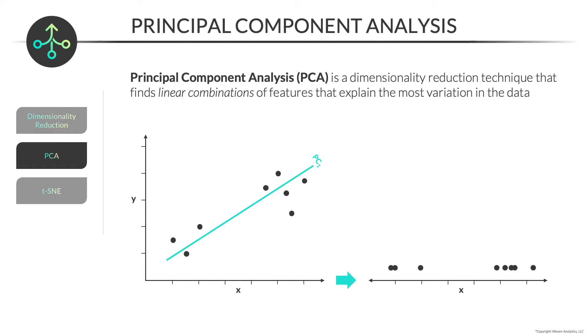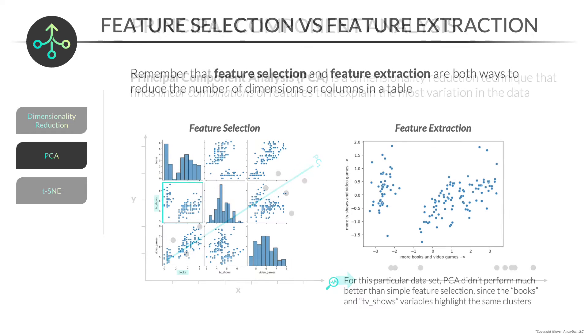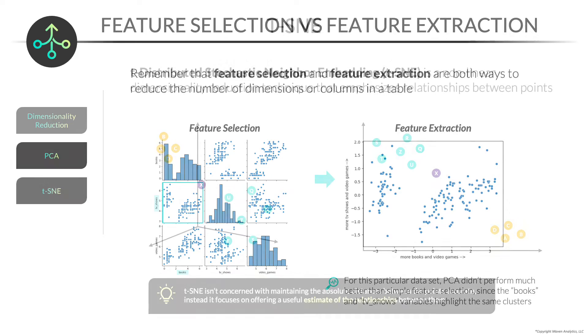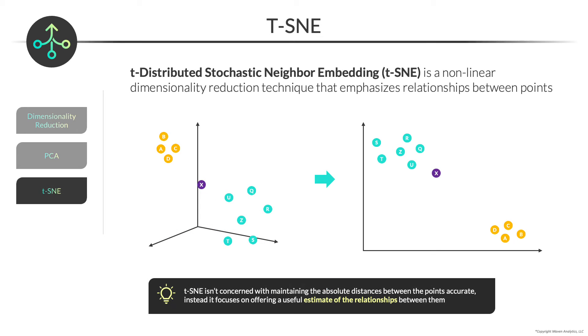We'll then cover two popular techniques: principal component analysis, or PCA, which is great for both feature extraction and data visualization, and also t-SNE, which is ideal for data visualization.